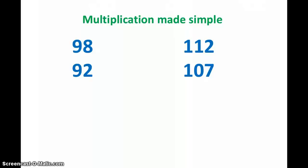As an example, the first thing we are thinking of is 98 into 92. The very first step is that we need to find out what these numbers are near to. Very simple, these numbers are near to 100, so we call the base as 100. So the first thing to remember here is that our base is 100.